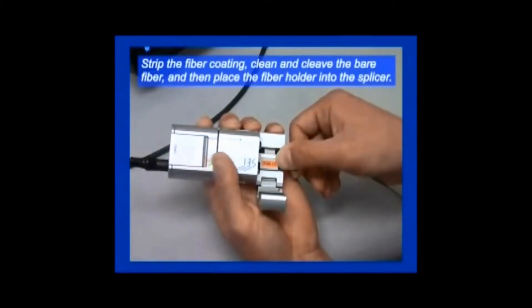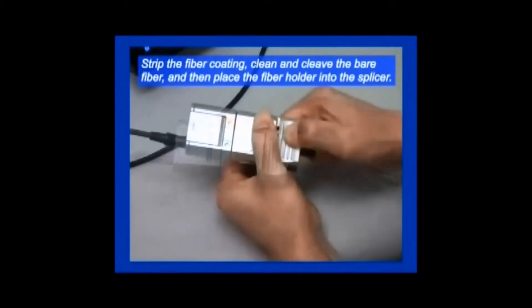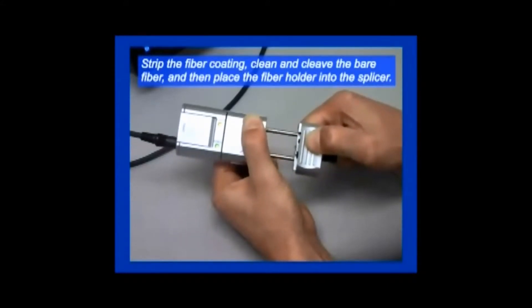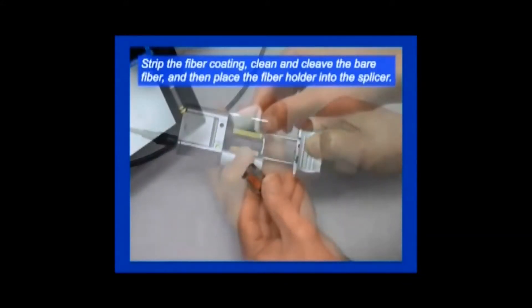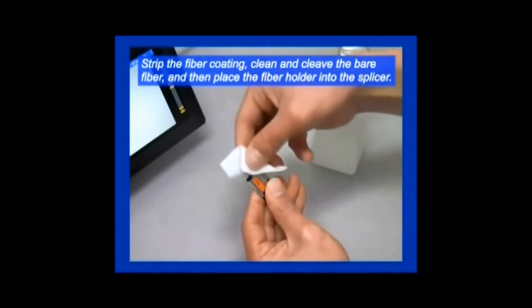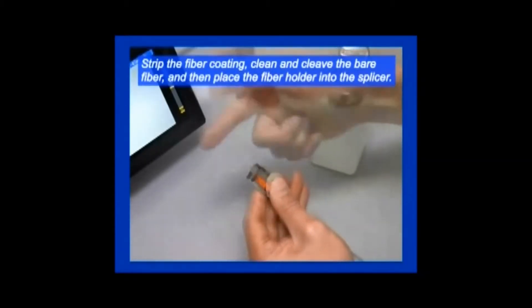The next step is to place the fiber ribbon into a fiber ribbon holder and then strip the fiber coating from the ribbon containing 12 fibers. The technician then cleans and cleaves, i.e. cuts, the bare fibers, followed by placing the fiber ribbon holder into the splicing machine.